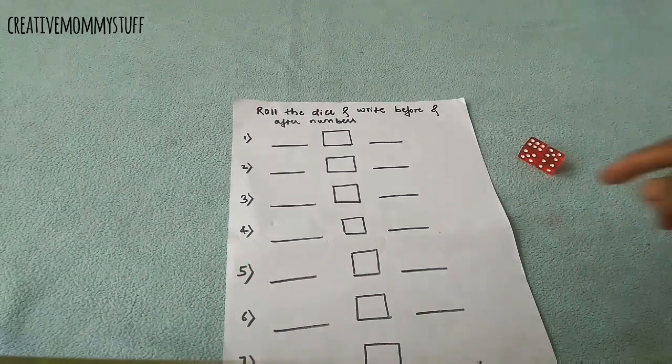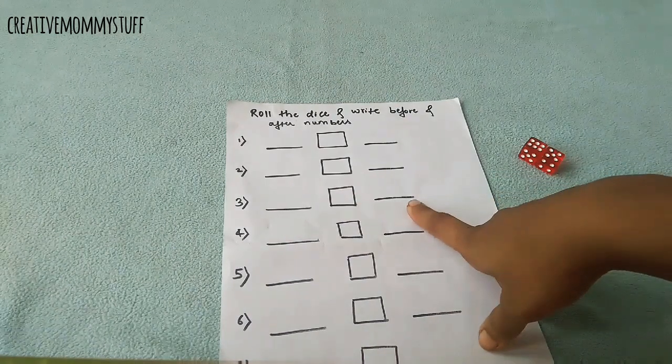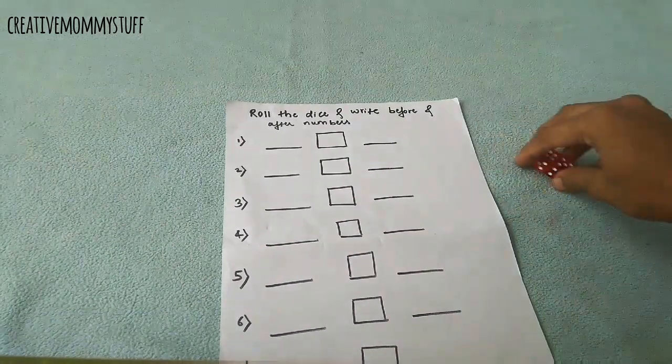So eleven, what comes before eleven? Ten. What comes after eleven? Twelve. So like this, this is for before and after numbers.